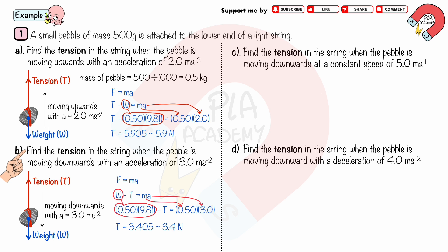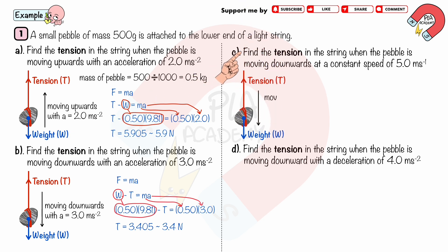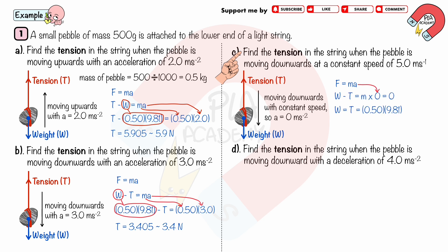Part c: Find the tension in the string when the pebble is moving downwards at a constant speed of 5 m/s. Since speed is constant, acceleration is zero, so the resultant force is zero. Therefore W − T = 0, and T = W = 0.5 × 9.81, giving T = 4.9 N (2 significant figures).